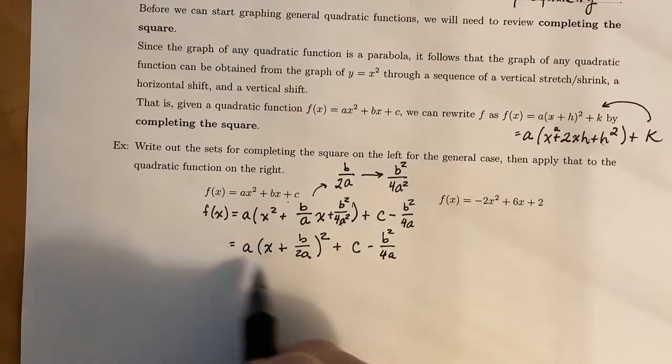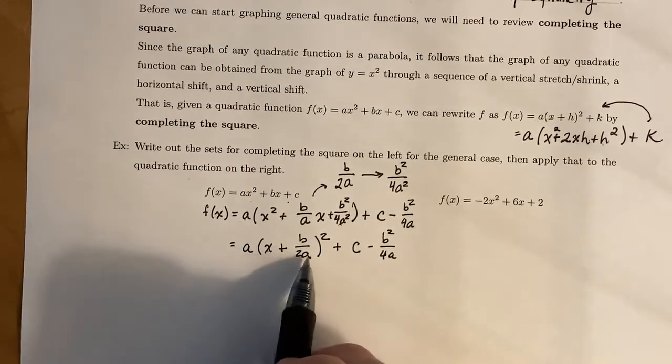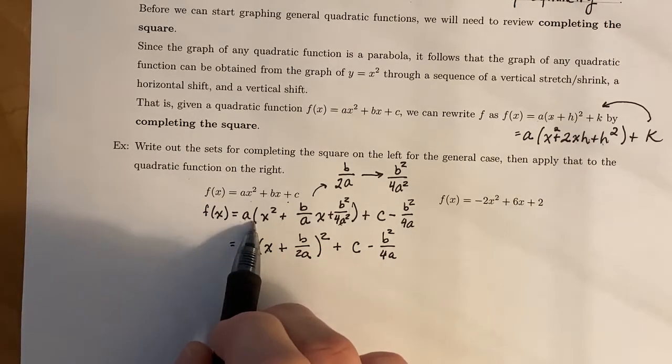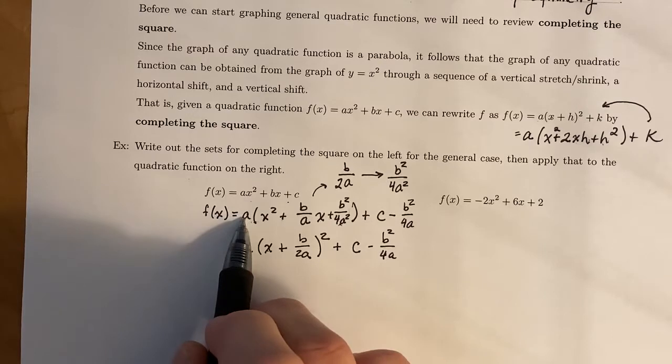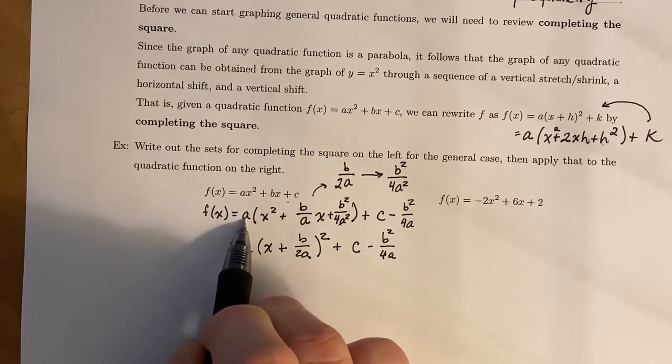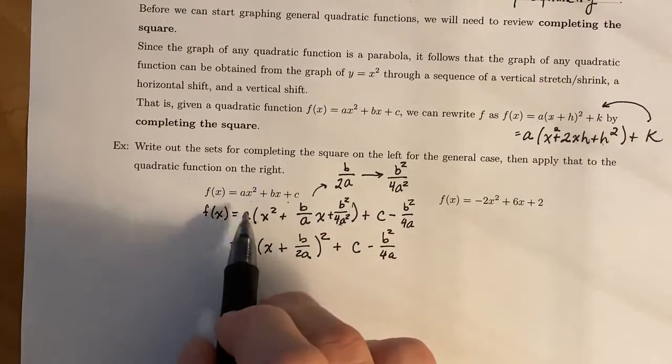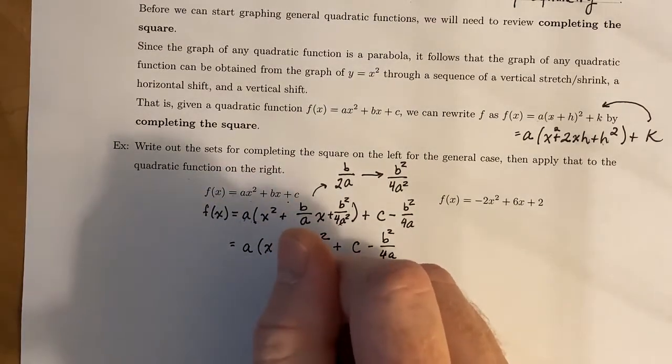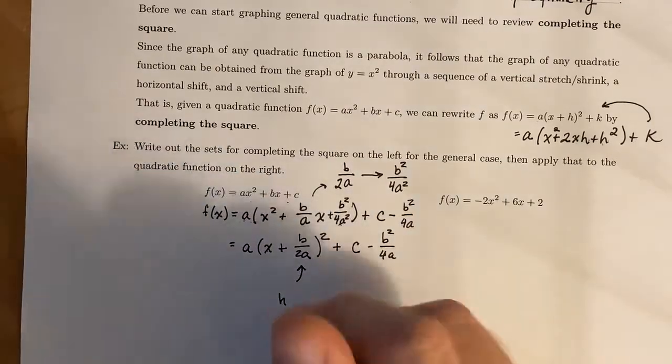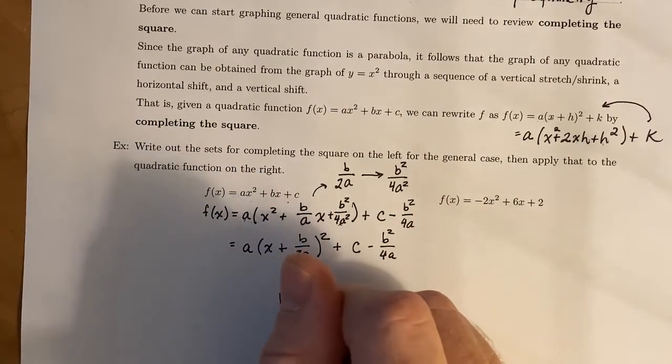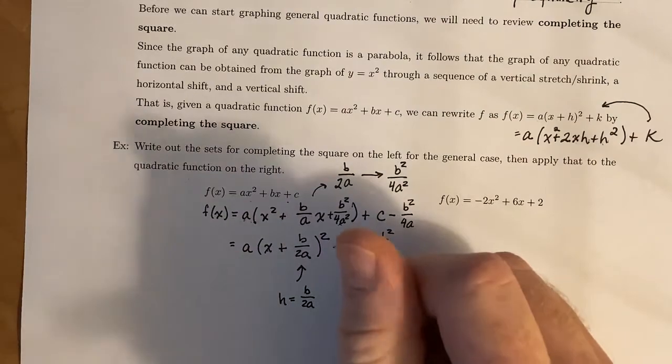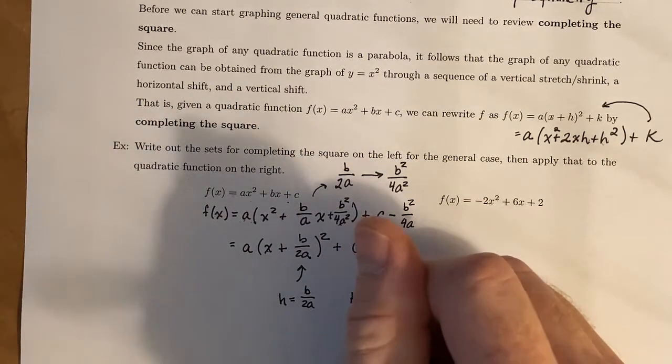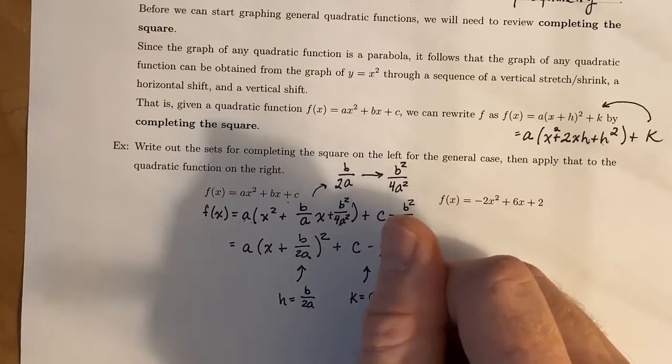And if you want to, I recommend pausing the video, foiling this out and making sure it matches up here. And you can go one step further and distribute this a and make sure that when you combine like terms, you end up back at the original spot. So what this gives us is our h right here, b/2a. And this gives us our k right here, c - b²/4a.